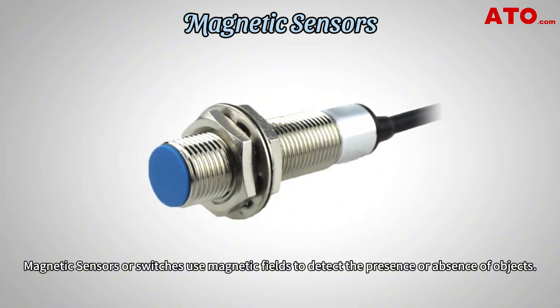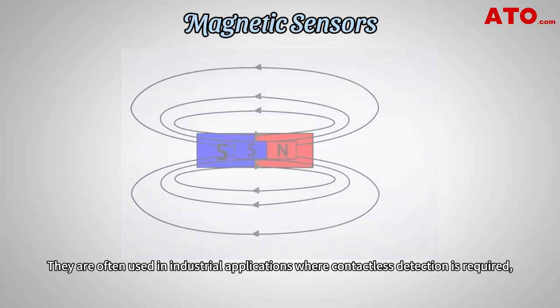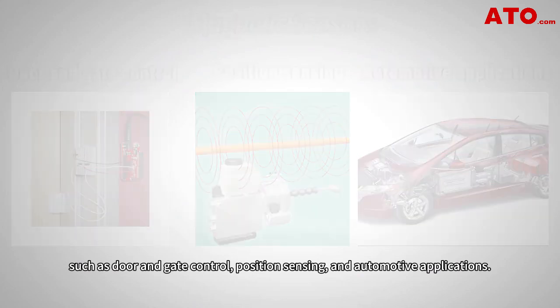Magnetic sensors or switches use magnetic fields to detect the presence or absence of objects. They are often used in industrial applications where contactless detection is required, such as door and gate control, position sensing and automotive applications.